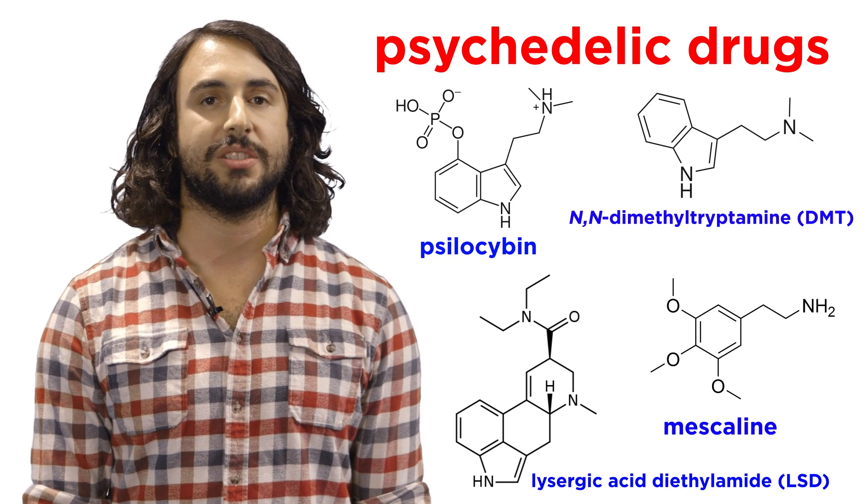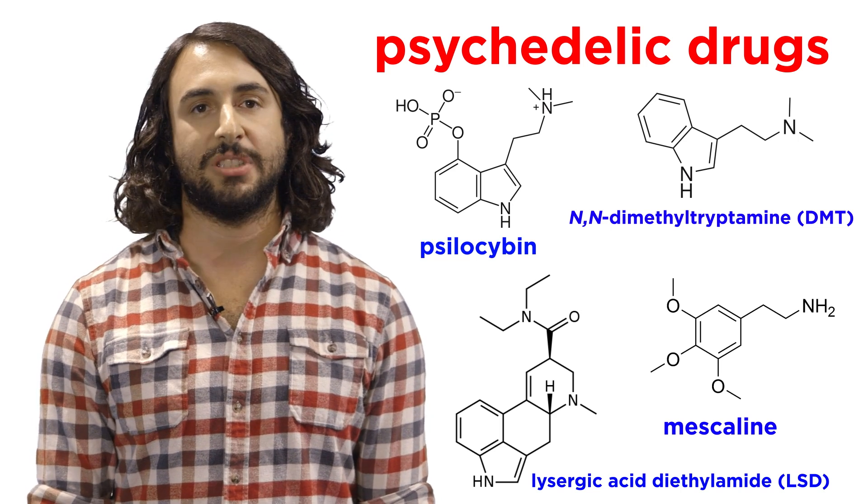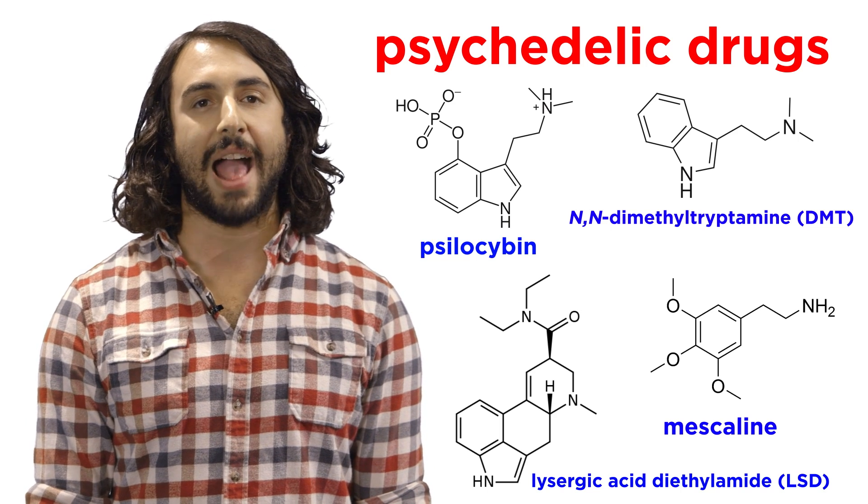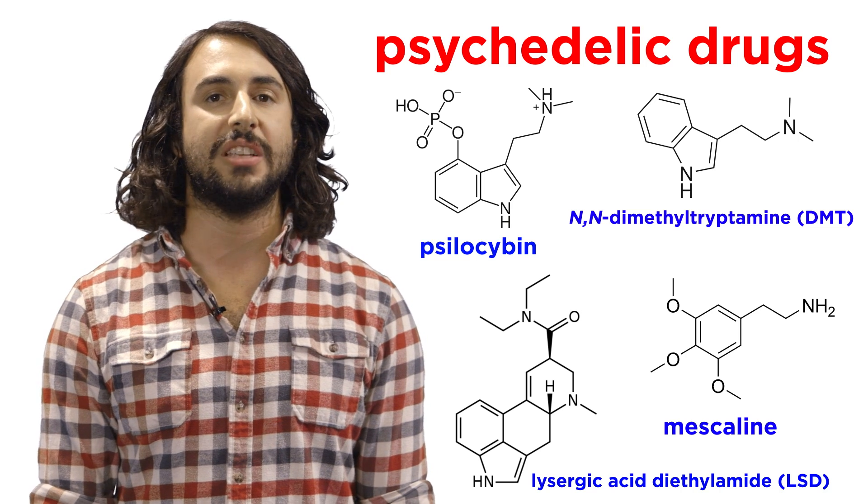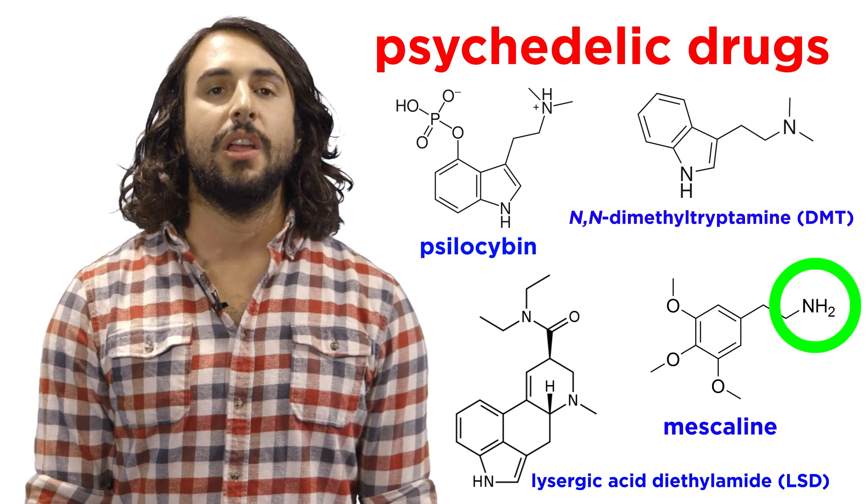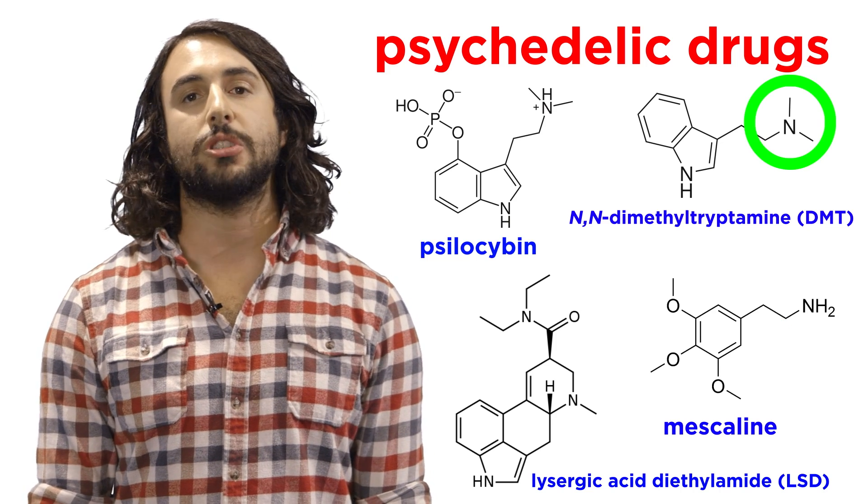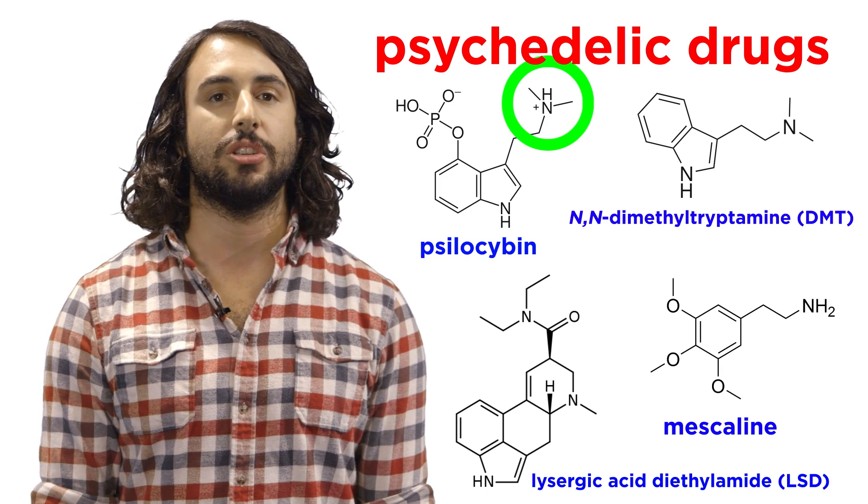Other psychedelic drugs include psilocybin, LSD, mescaline, and DMT, which predominantly operate by activating serotonin receptors. A key feature that is common to many of these molecules is the phenylethylamine functional group. This structural fragment appears to be crucial in modifying the way nerve cells carry messages to the brain.